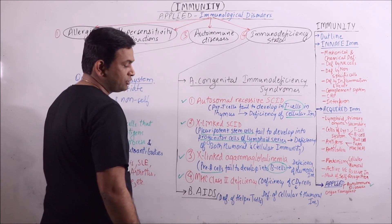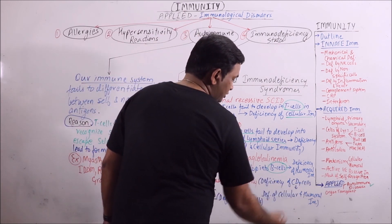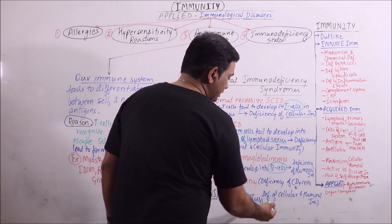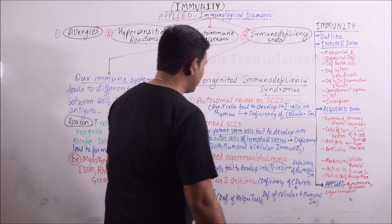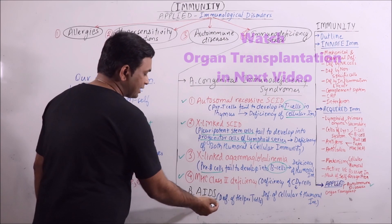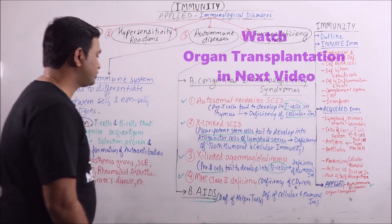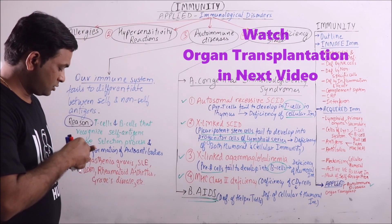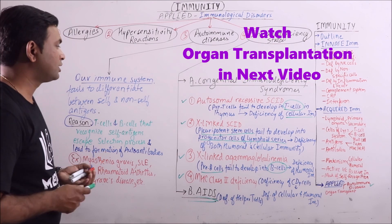MHC class II deficiency. Because of this CD4 cells are deficient and deficiency of cellular and humoral immunity both occurs. And next is acquired immunodeficiency syndrome, in which the deficiency of helper T cells occur.